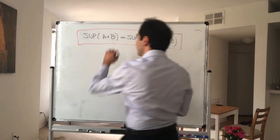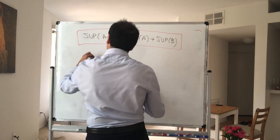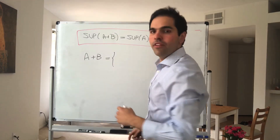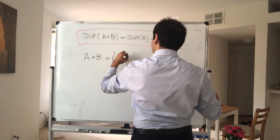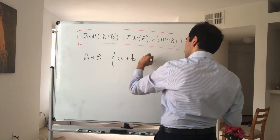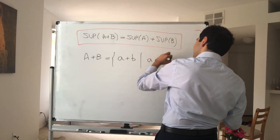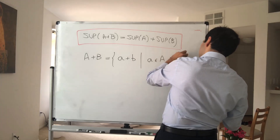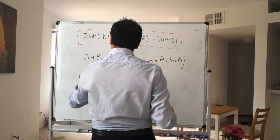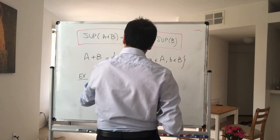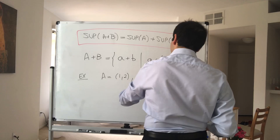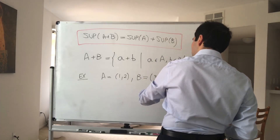What do I mean by that? First of all, what's the definition of A plus B? Literally all you do is add elements of A with elements of B — it's numbers of the form a plus b, where a is in A and b is in B. For instance, you can show that if A is the interval [1, 2] and B is the interval [3, 4]...